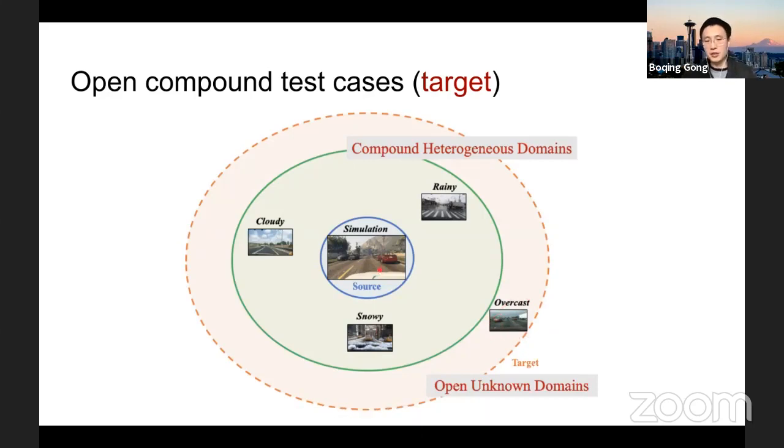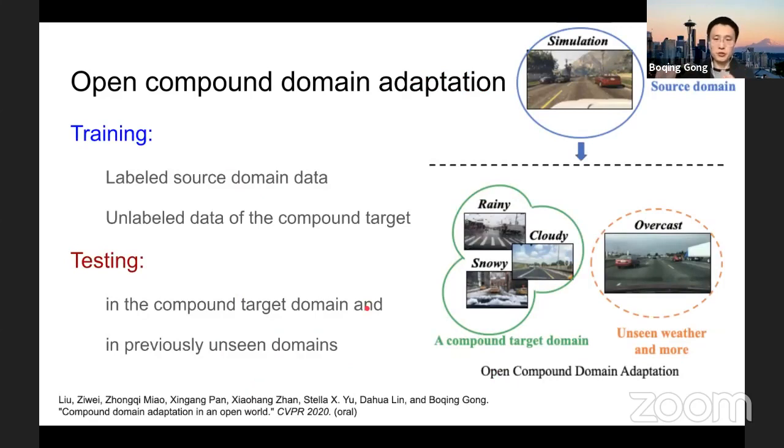Not only that case, it's also that even if we cover all the scenarios in their training side, maybe they do not have enough training set, training data to well represent some of the domains here, some of the weather conditions. Therefore, we tried to formalize this scenario into a research problem. We call it an open compound domain adaptation.